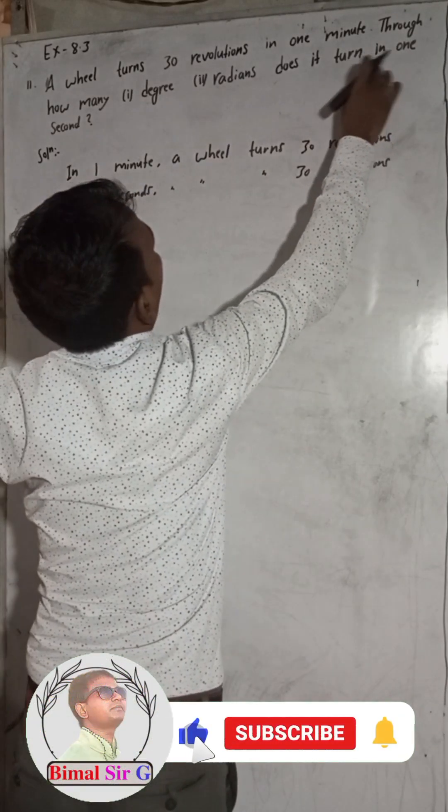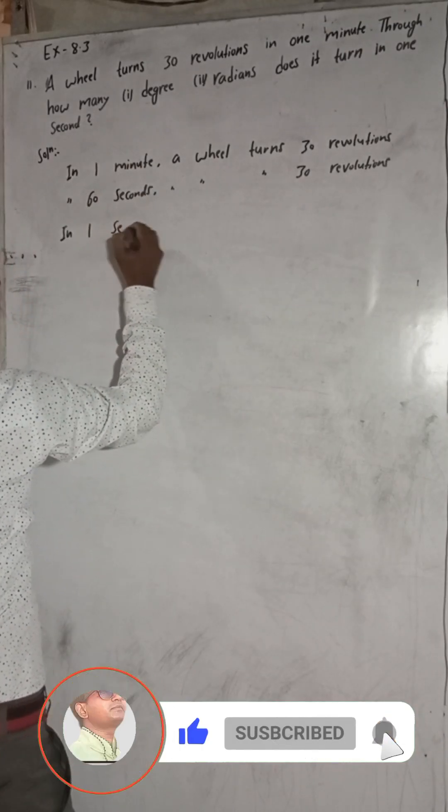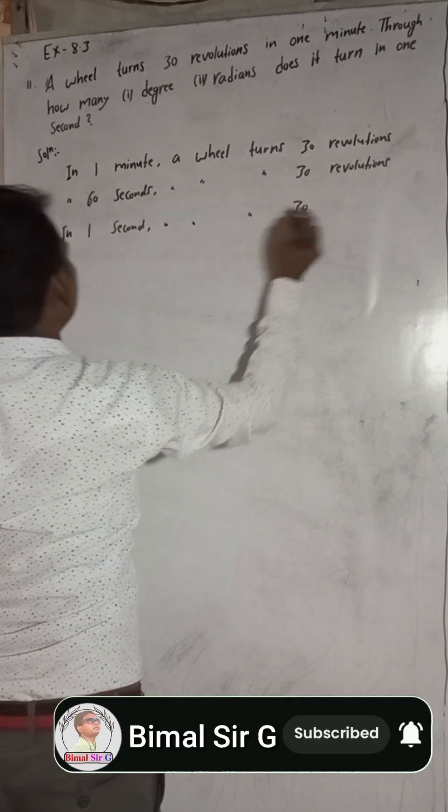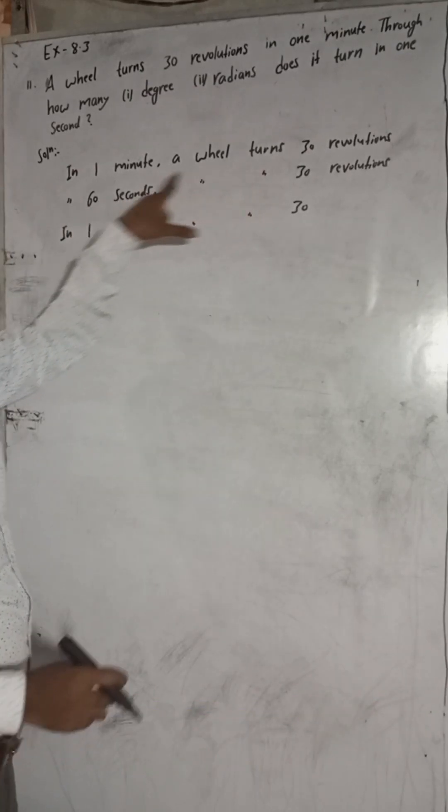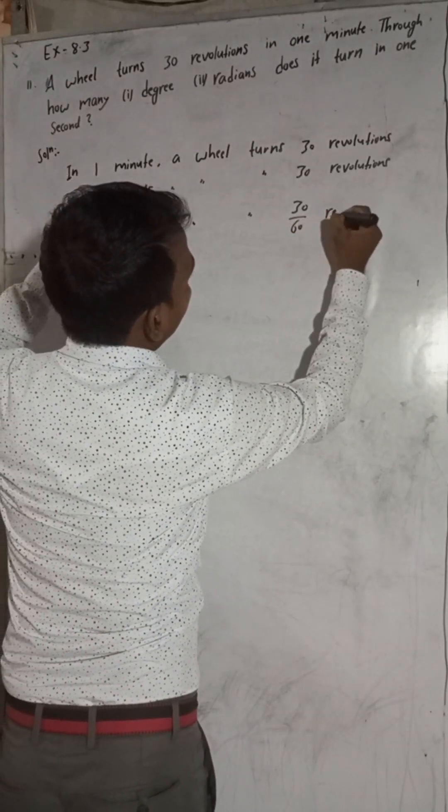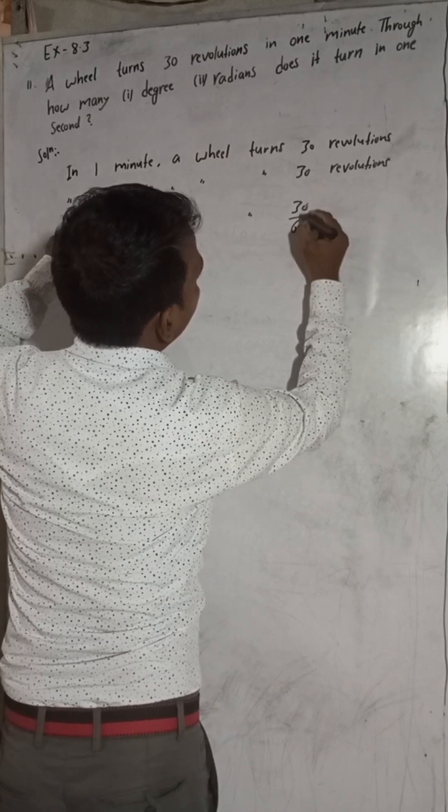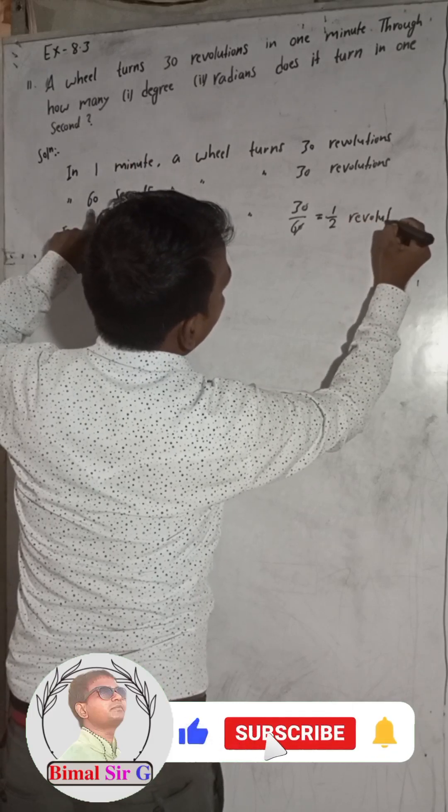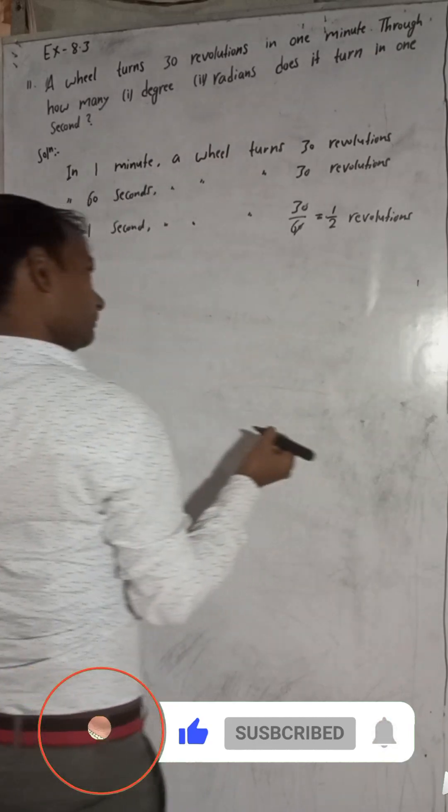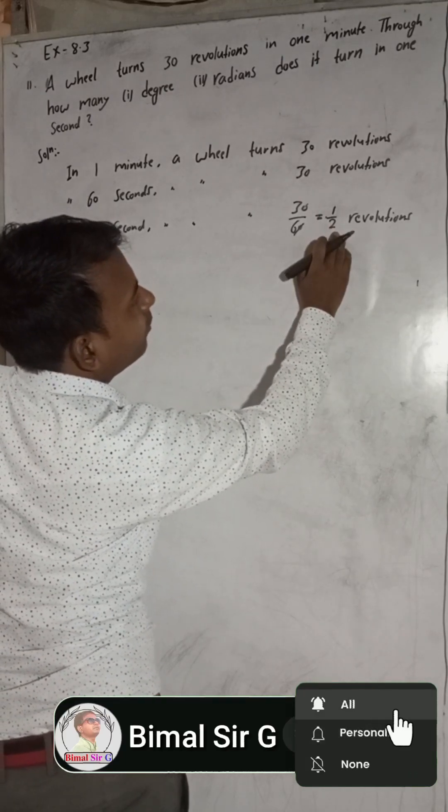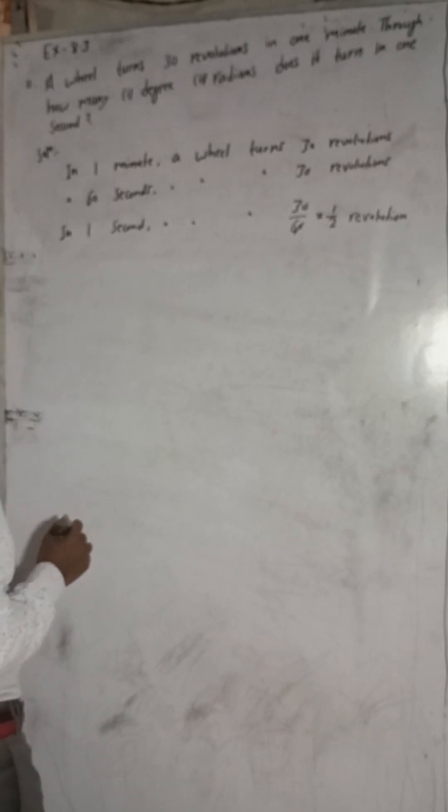In one second, then we want to find in one second. In 60 seconds 30 revolutions, so in one second there will be less revolution, so we have to divide by 60. This equals one by two revolution, 0.5 revolutions. Now in one second we got this much revolution.